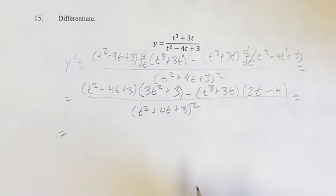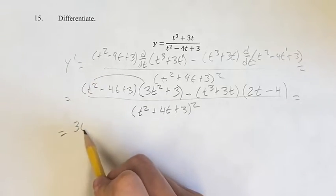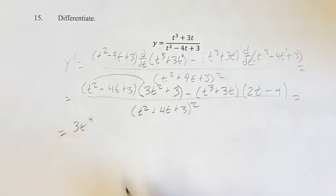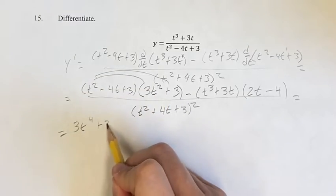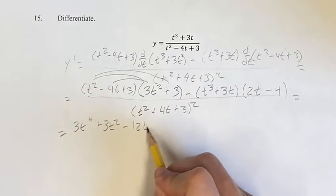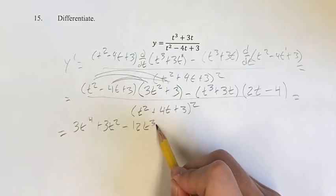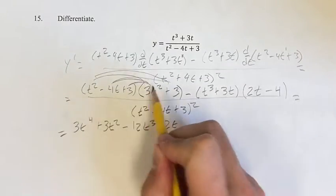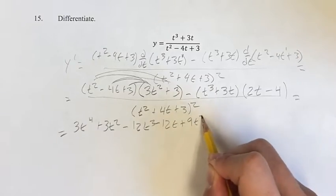And then we can simplify this as 3t squared plus 3 squared. Plus 3t squared, minus 4 times 3 is minus 12t cubed, minus 12t, plus 9t squared.